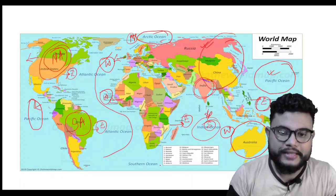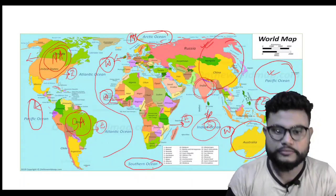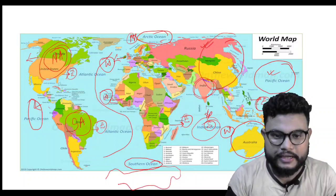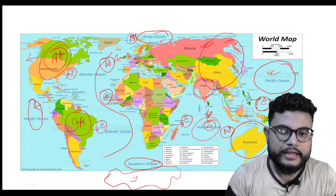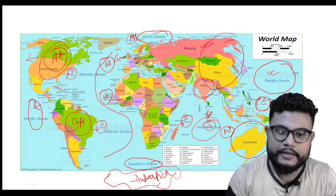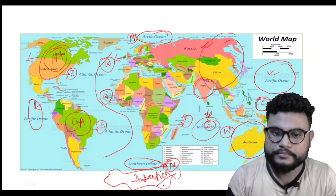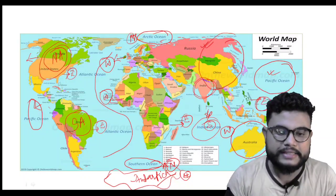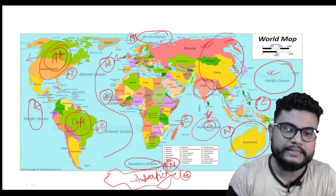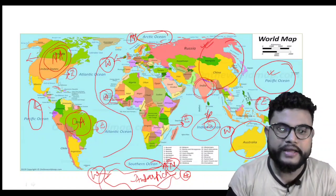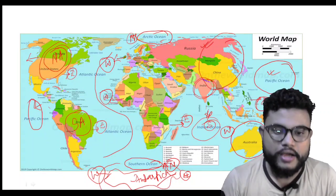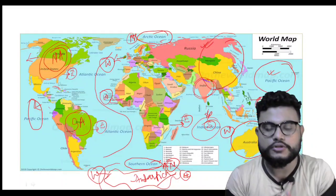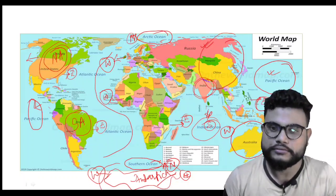Then the last one is the Southern Ocean. Southern Ocean is found to the north of Antarctica, to the east of Antarctica, to the south of Antarctica, and to the west of Antarctica as well. So the ocean that more or less encircles Antarctica we call the Southern Ocean. That is why this ocean is also known as the Antarctic Ocean.